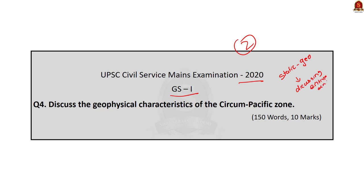Let me read out the question: Discuss the geophysical characteristics of the circum-pacific zone. This question is a 10 marker, so we have to limit our answers to 150 words. But since this is a discussion, I will be discussing the answer elaborately. You guys stay cautious and stick to the word limit.